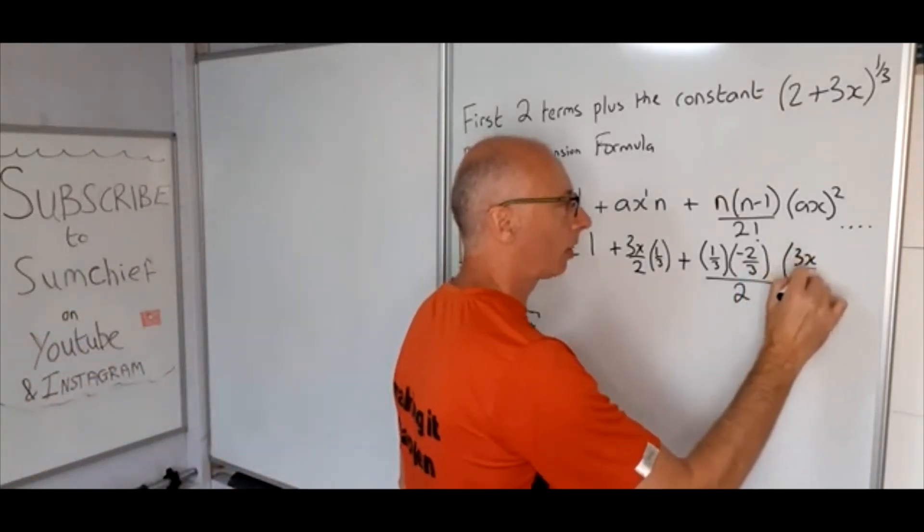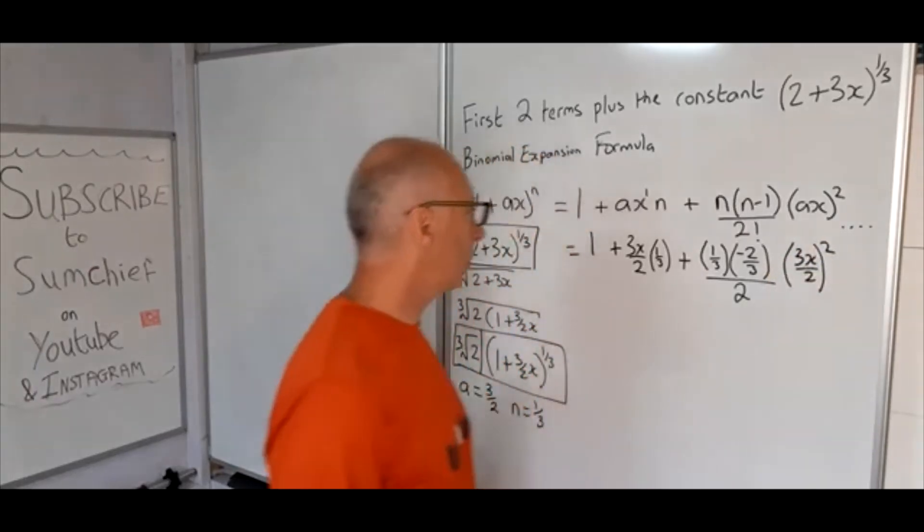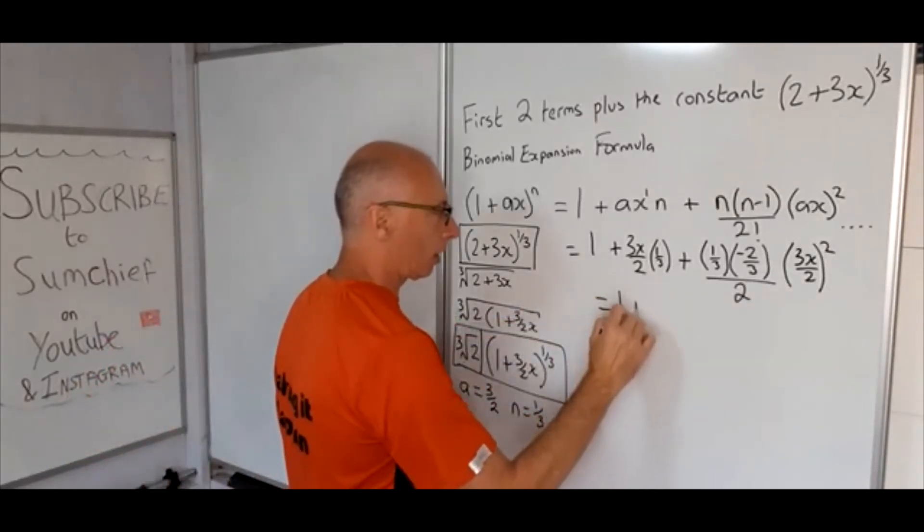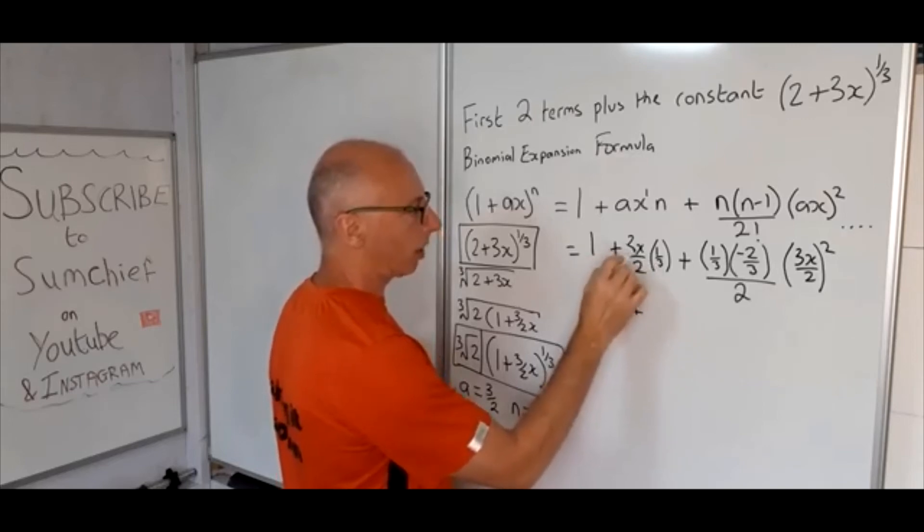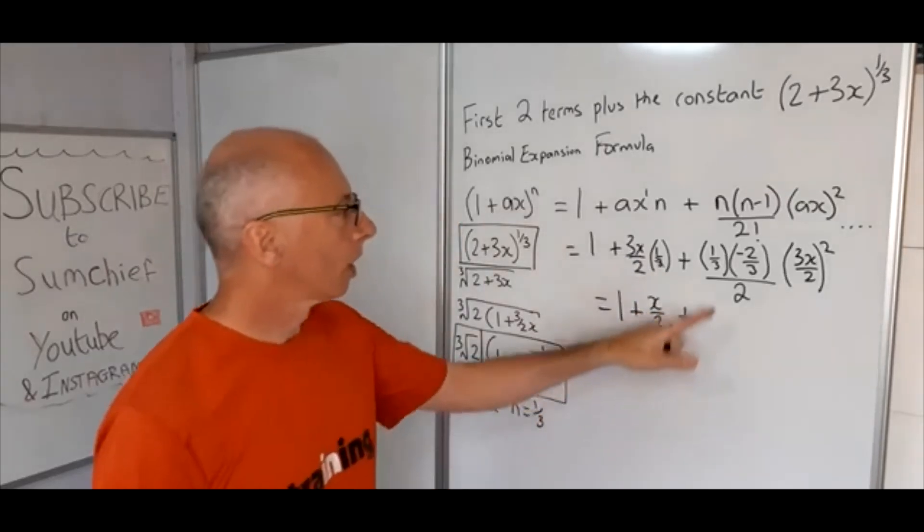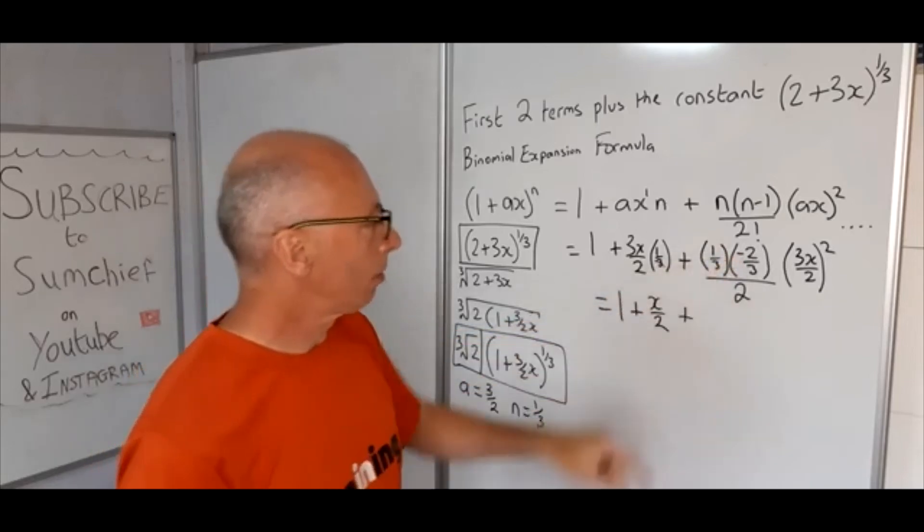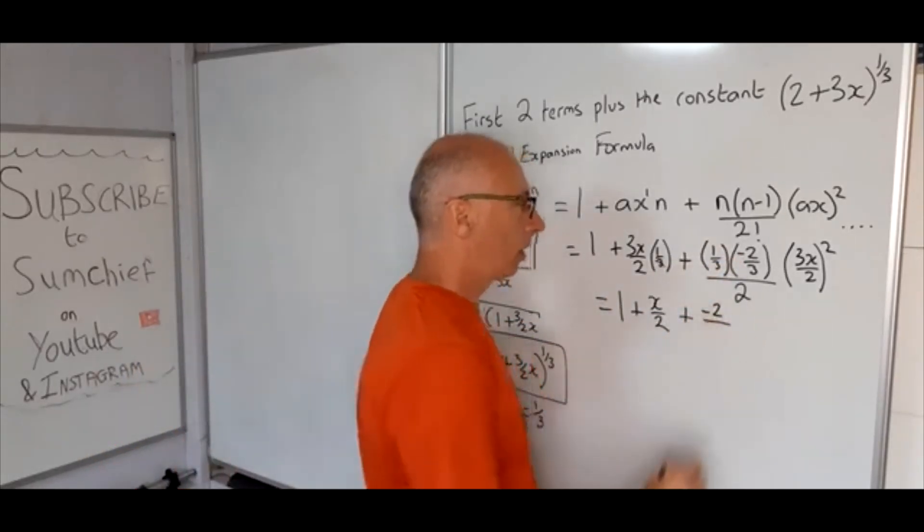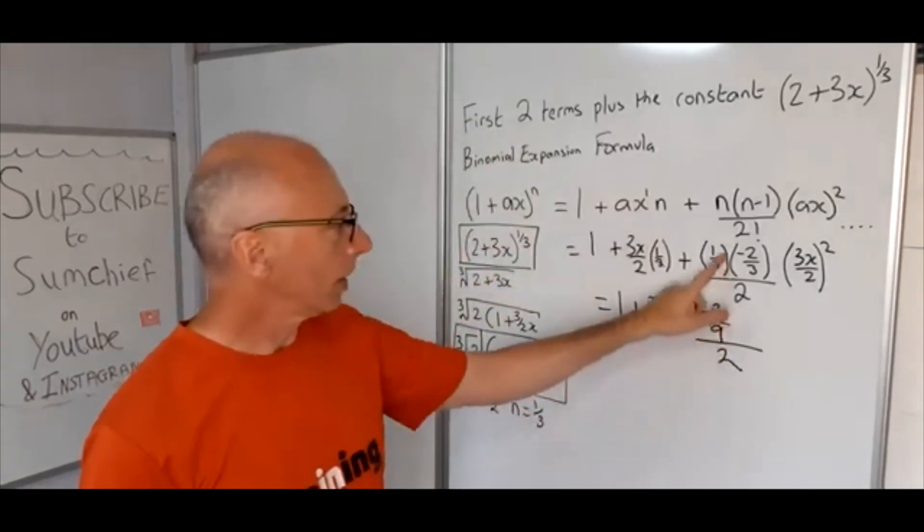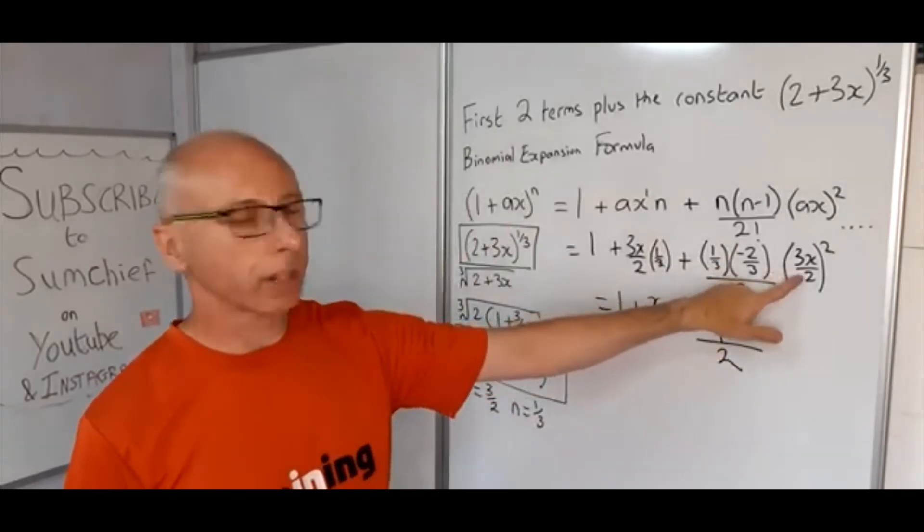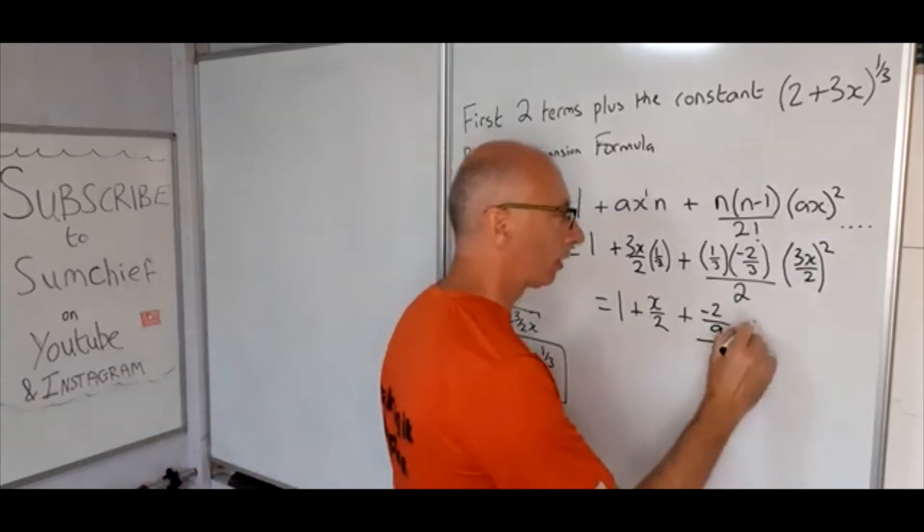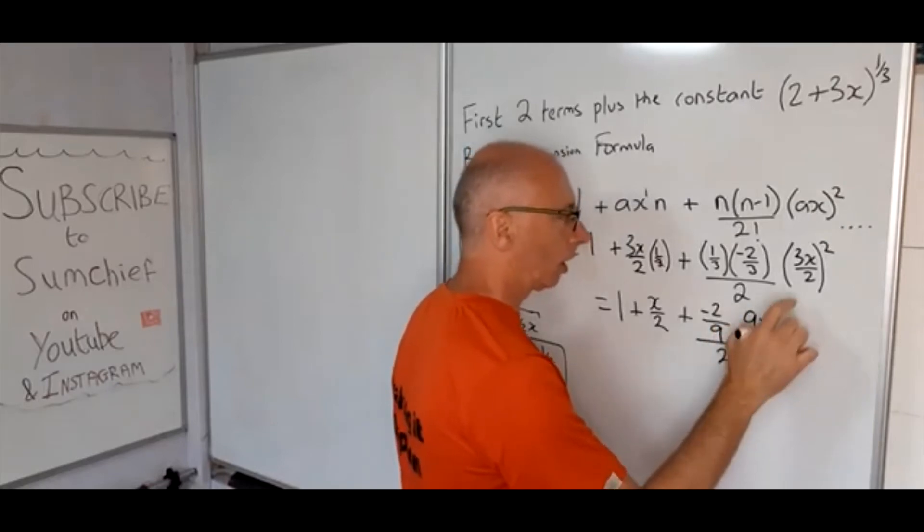Just keep that simple for now and then we'll square it afterwards. Simplification time, let's make this look a little bit easier to see. So 3x times 1/3, those 3s cancel out so we're just left with x/2. 1 times -2 is -2, 3 times 3 is 9 and then divide that by 2. Then (3x/2)^2: remember to square the top and the bottom, so 3x becomes 9x^2 divided by 4.